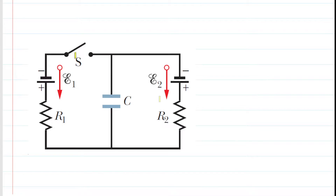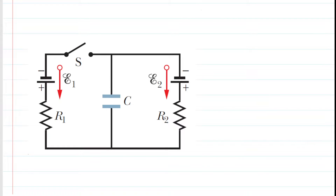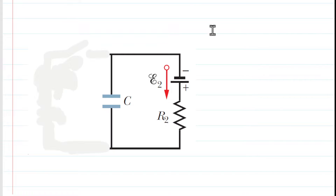If the switch S has been open for a very long period of time, then current cannot flow through that section of the circuit when the switch is open. So we can essentially eliminate that section. What we're left with is a pretty simple circuit — a basic RC circuit with one resistor and one capacitor.